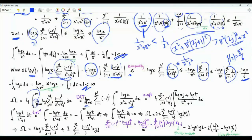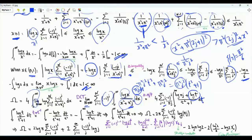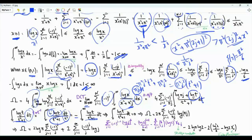We perform the change of variables x equals pi j t. The integral remains from zero to infinity; log x becomes log pi j plus log t. In the denominator we get pi squared j squared times t squared plus one, and dx is pi j dt. The integral of log t over t squared plus one vanishes, because substituting t to the minus one maps the integral to minus itself, so it equals zero.